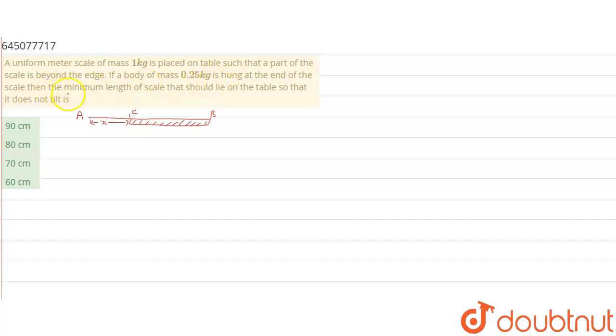A mass is hung at end of scale. The minimum length of scale that should lie on table so that it does not tilt - because whenever a weight will hang here it does not tilt. So the whole length of this is one meter, and mass is 0.25 kg. So basically we have to find the length of BC.